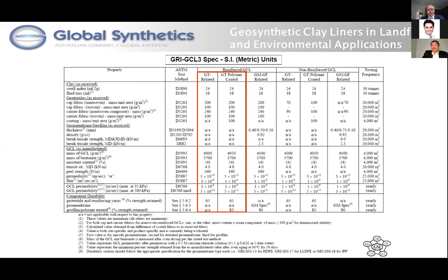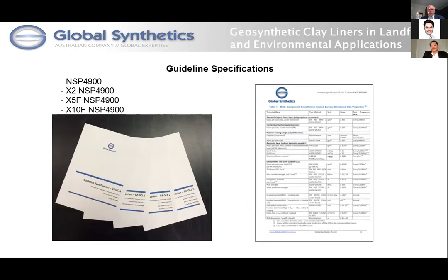The advantages of coated GCLs include resistance against desiccation, protection against ion exchange, reduction of root penetration — nothing penetrates past the PE coating — it acts as a gas barrier, and it improves permittivity by up to a magnitude of three, which is a thousand times better than a standard GCL. The GRI GCL3 has a section on extruded coated GCLs covering classification, designation, and these specific products.